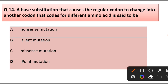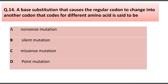Question number 14. A base substitution that causes a regular codon to change into another codon that codes for a different amino acid is said to be: nonsense mutation, silent mutation, missense mutation, or point mutation. Answer is option C: Missense mutation.